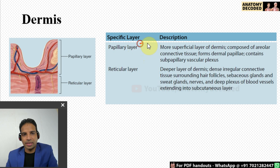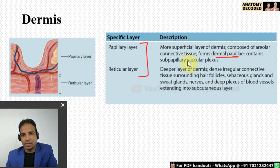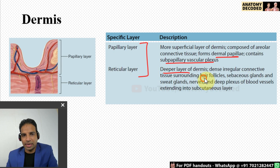The dermis of the skin has two layers: a superficial papillary layer and a deep reticular layer. The superficial papillary layer forms the dermal papillae and contains a sub-papillary vascular plexus. The reticular layer is the deeper layer of the dermis consisting of dense irregular connective tissue. Hair follicles, sebaceous glands, sweat glands, and nerves are all present in the reticular layer.